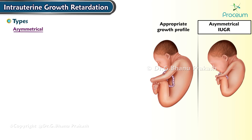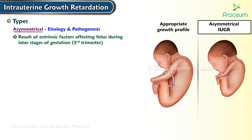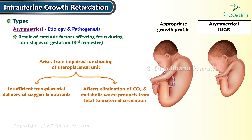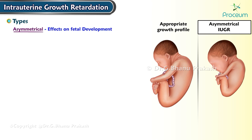Asymmetrical intrauterine growth restriction is primarily the result of extrinsic factors affecting the fetus during the later stages of gestation, typically in the third trimester. The core issue arises from impaired functioning of the uteroplacental unit, leading to insufficient transplacental delivery of oxygen and nutrients. This impairment also affects the elimination of carbon dioxide and metabolic waste products from the fetal to the maternal circulation.